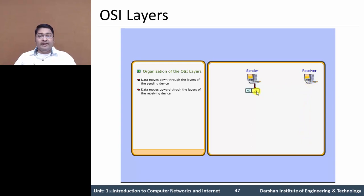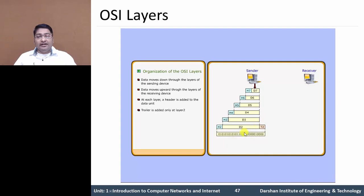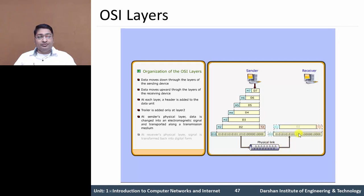D7 is a data unit at layer 7, similarly D6 is a data unit at layer 6, and so on. This data unit includes the header, and at layer 2, the T2 trailing part is added at layer 2 in this data unit. After that, it converts into digital format at physical layer. At the sender physical layer, data is changed to electromagnetic signal and transported along the physical medium or physical link. At the receiving side, it converts again to digital format and passes to the upper layer.